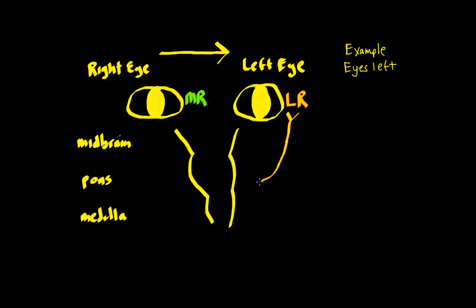That muscle is going to contract from a cranial nerve called the abducens nerve. And since cranial nerves innervate ipsilateral structures, we have the left cranial nerve 6, the left abducens nerve, and its associated nucleus is the left abducens nucleus in the caudal pontine tegmentum.